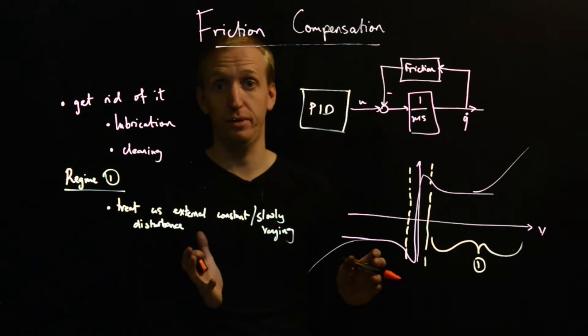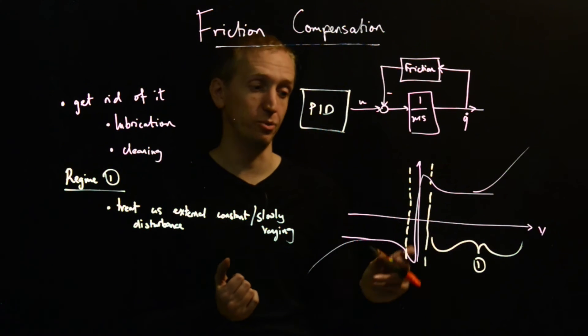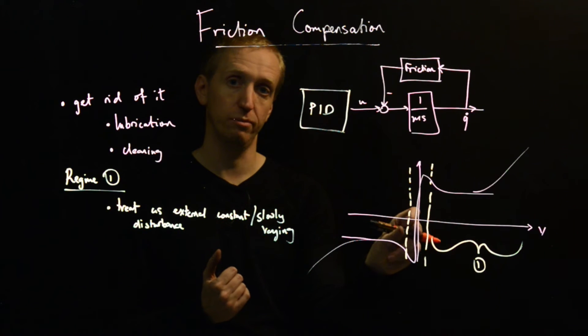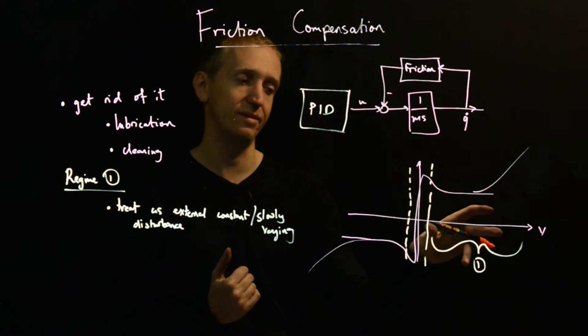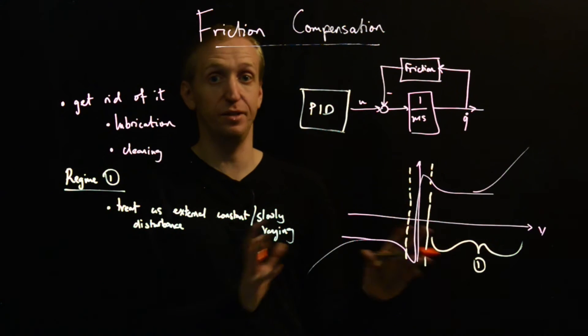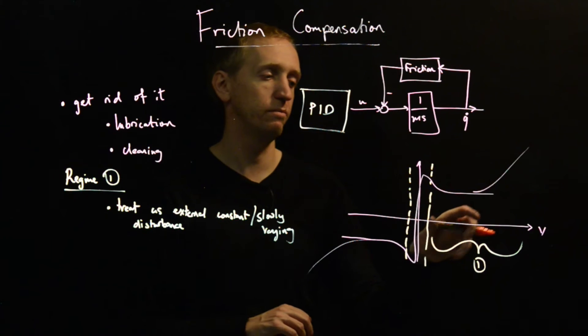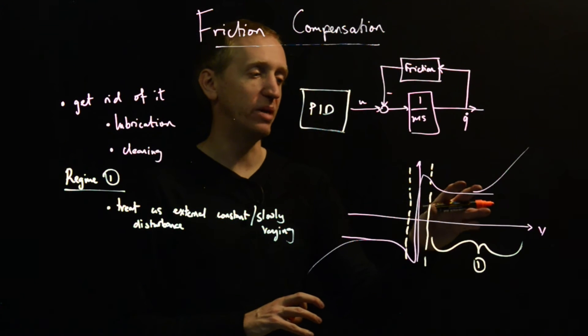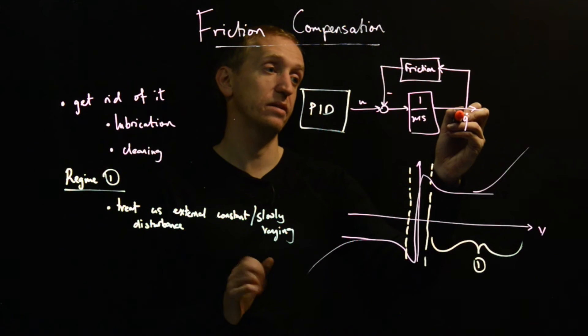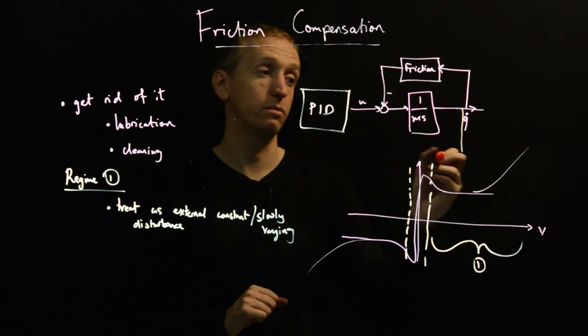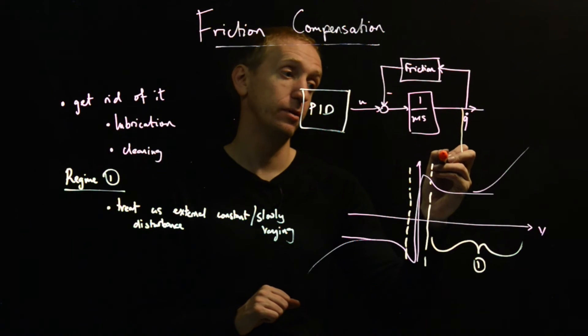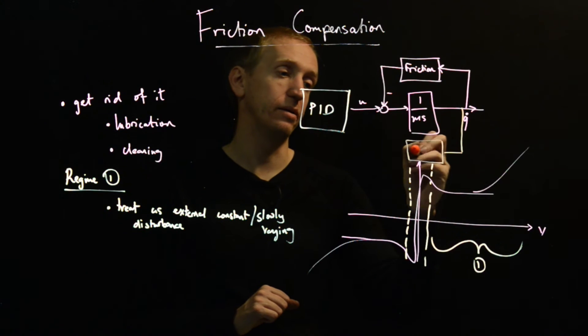That's a good thing that you can do to deal with friction when you're operating in regime 1. Another thing that you can try to do is you can try and build up friction models. As we said, it's very difficult to model friction in this regime. It's hard to model friction in general, but I would say maybe it's a bit easier in this regime here.